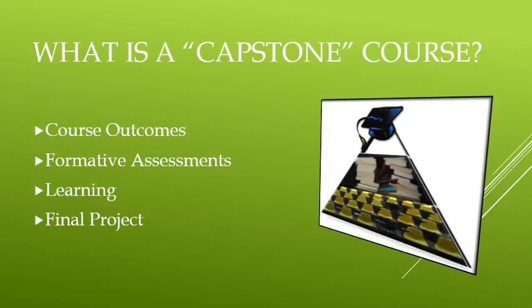Lastly, your summative assessment will be developed from the formative assessments described. The summative assessment is your final project, which is designed to assess and measure your competency on the program outcomes. Collectively, the formative assessments equal 20% of your overall course grade, while 80% derives from the final project. There are three milestones that lead into your formal research report, which is your final project.